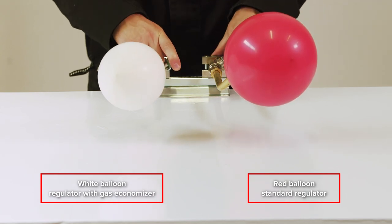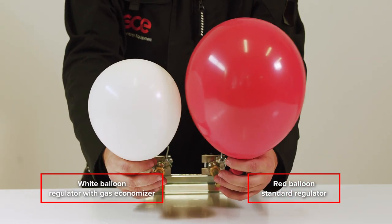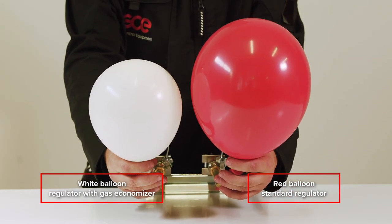If the operator interrupts the welding process, the shielding gas accumulates in the hoses. You can see the regulator with integrated gas economiser has stopped the supply of the gas faster, as visible on the indicator. It is also obvious by the size of the balloons.